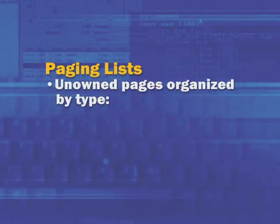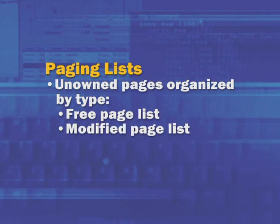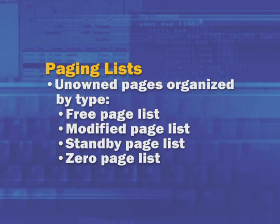To understand core Windows memory performance counters and answer whether you need more memory, we need to delve into how Windows organizes memory not currently owned by a process. The Windows memory manager organizes this unassigned memory on four lists: the free page list, the modified list, the standby list, and the zero page list.